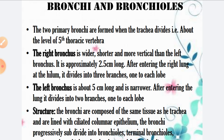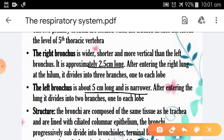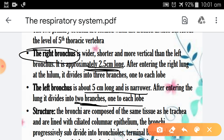The left bronchus is longer and narrower — approximately 5 cm long. After entering the lung, it divides into two branches, one to each lobe, since the left lung has two lobes. The most important clinical point is that the right bronchus is short and wide, while the left bronchus is longer and narrower. Because of this, the right bronchus is more prone to aspiration of foreign objects and infection, as it provides more space for organisms.